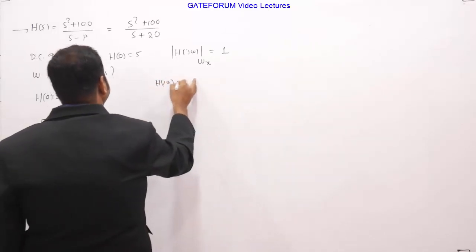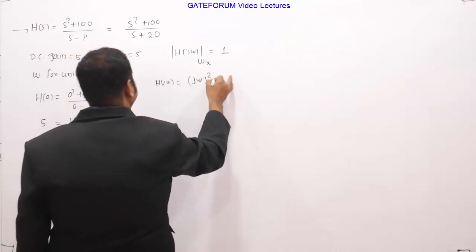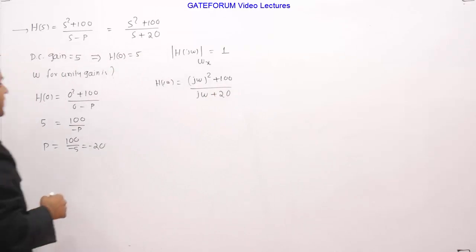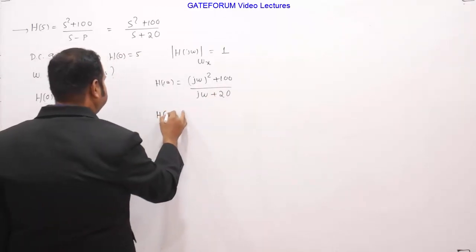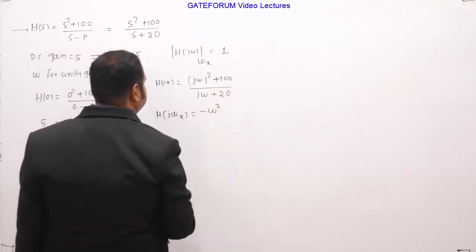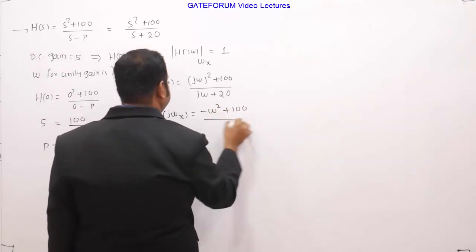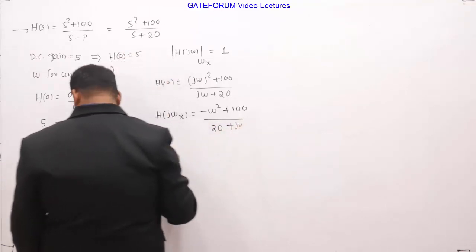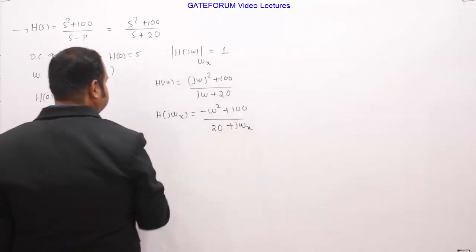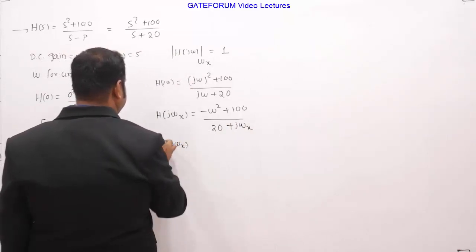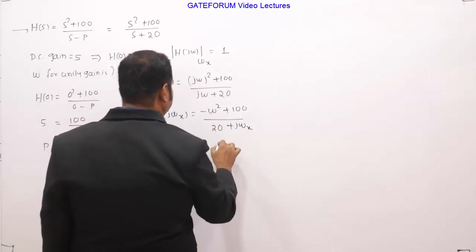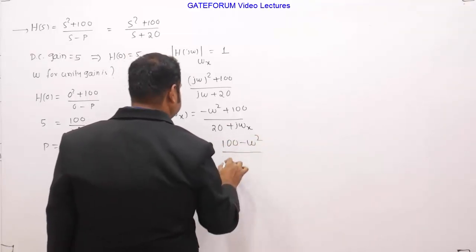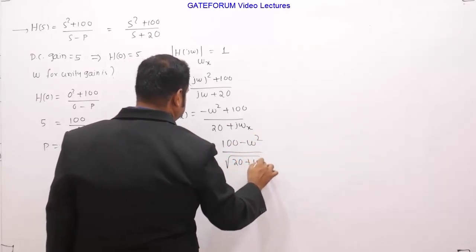h of j omega is equals to j omega square plus 100 divided by j omega plus 20, simply I am replacing s by j omega. So h of j omega x is equals to minus omega x square plus 100 divided by 20 plus j omega x. So if I ask you what is mod of this h of j omega x, you get 100 minus omega x square divided by square root of 20 square plus omega x square.